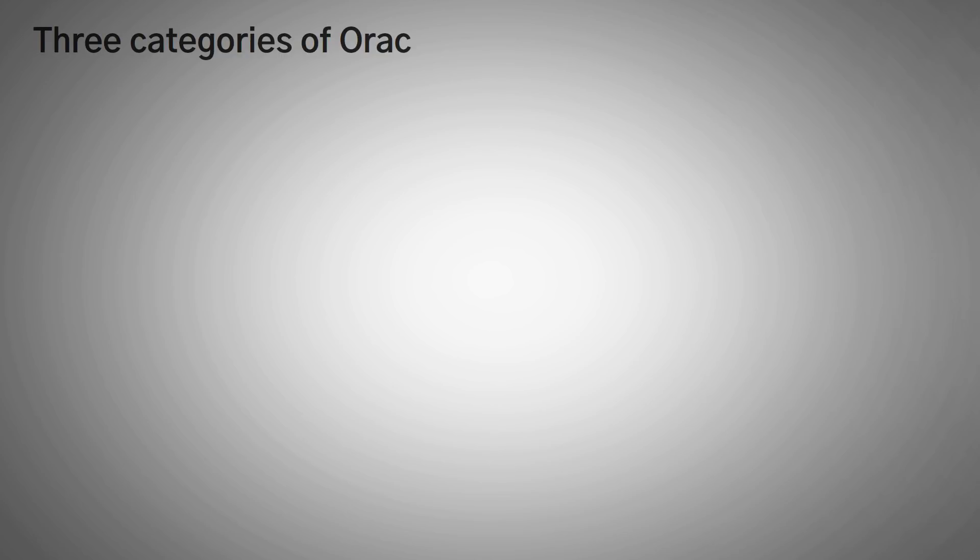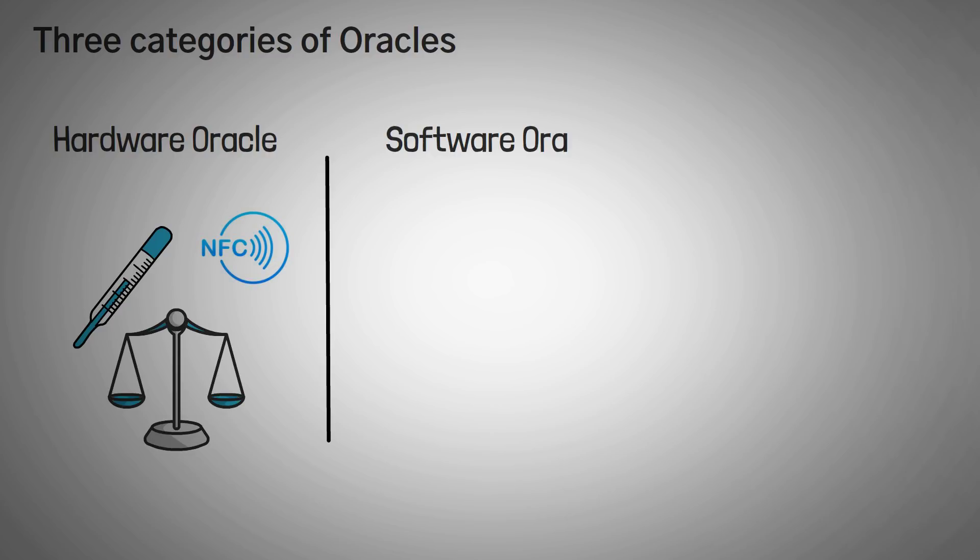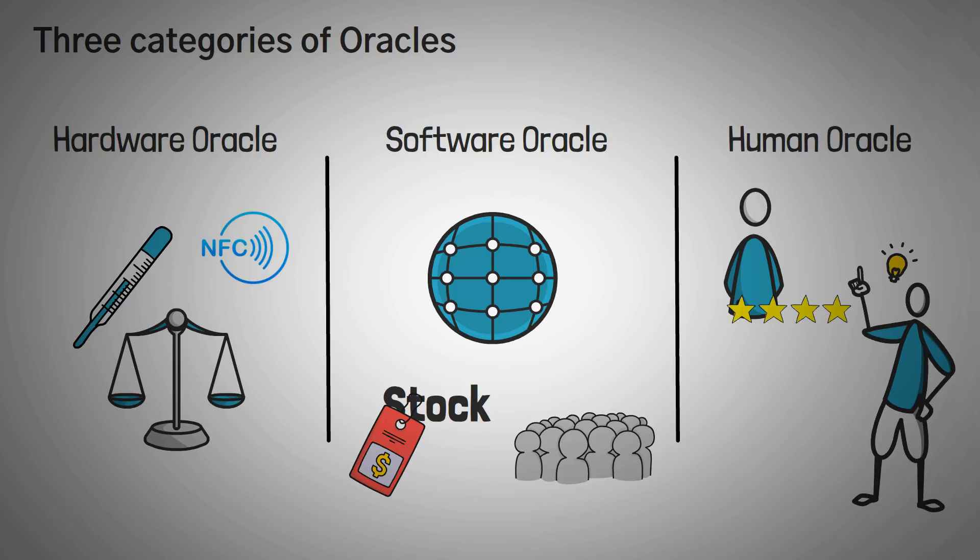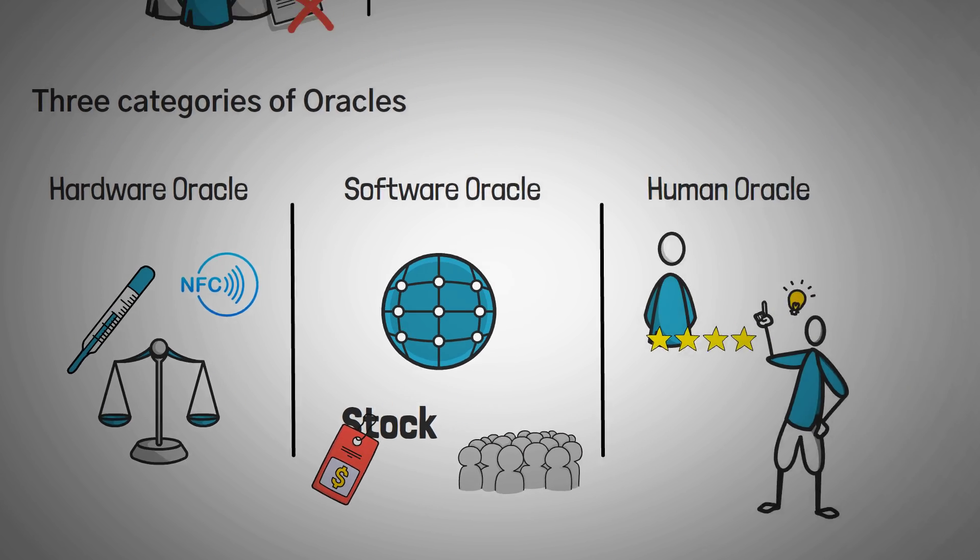Without getting too technical, I also want to share with you that there are different types of oracles, and these different types usually specialize in one of three categories. For example, hardware oracles read information from real-world sensors, like a thermometer, or a weighing scale, or even if an NFC tag can be found nearby. Software oracles find information on the web, like stock market data, or how many users are on a website. And third, human oracles are oracles that consolidate human data, like reviews or important ideas from people with specialized skills or knowledge. But if we started to explain this, it'd start to get very complicated.